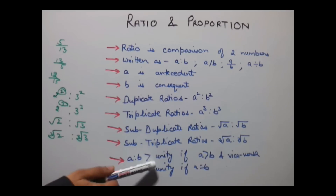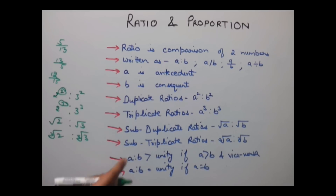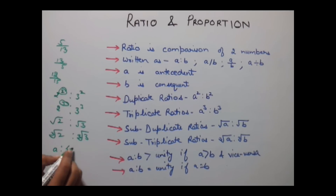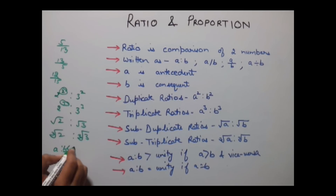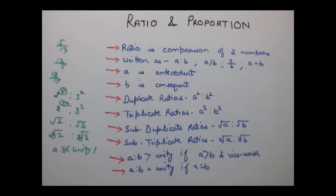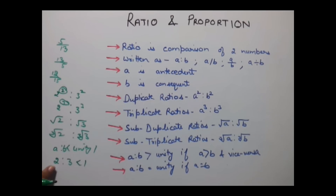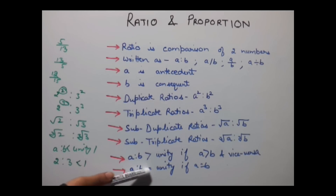If A ratio B is greater than unity, it is only possible when A is greater than B. Conversely, if A ratio B is less than unity, it is only when B is greater than A. For example, 2 ratio 3 gives an answer less than 1 because B is greater than A. A ratio B equals unity only when A and B are equal.